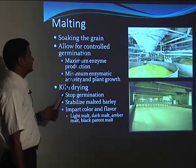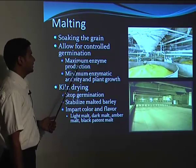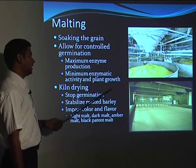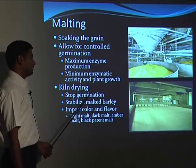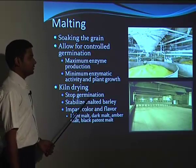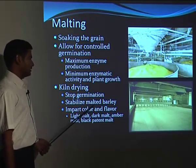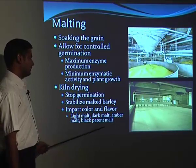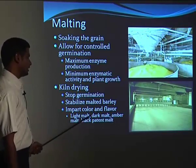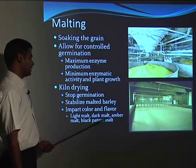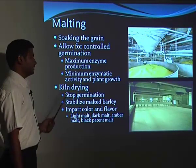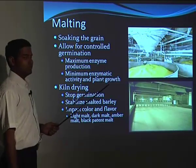During malting, kilning of the grain allows controlled germination for maximum enzyme production with minimum enzyme activity and plant growth. Then kiln drying stops the germination. Stabilization of malted barley imparts color and flavor by roasting. Depending on the degree of roasting of the germinated barley, we get light malt, dark malt, amber malt, or black patent malt.